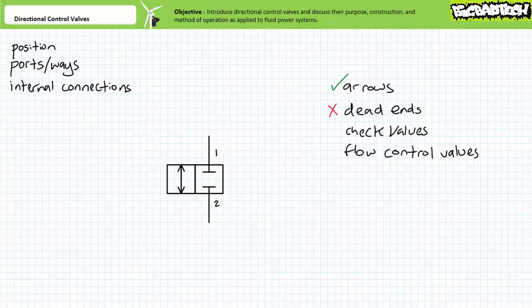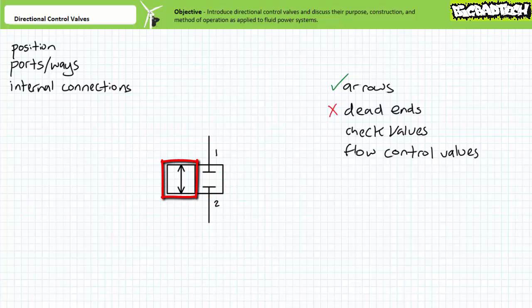Once we examine the cutaway of a directional control valve, I'll come back and explain how check valves and flow control valves internal to a position box work. As previously discussed, each valve position performs a specific function. This position closes the path from one to two and fluid cannot flow. This position opens a bidirectional path from one to two through which fluid can flow.